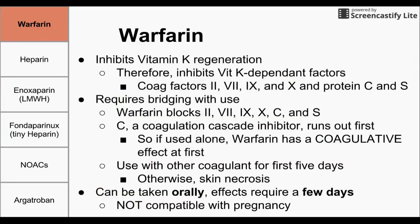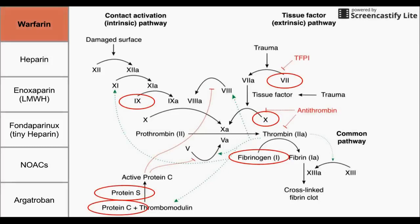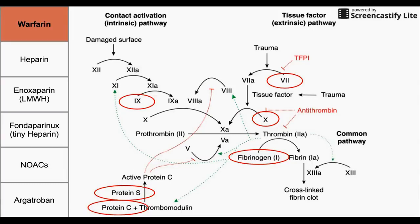Warfarin also requires bridging to use. Warfarin blocks this list of coagulation factors, and of these, protein C is the one that runs out first. It has a short half-life and a short concentration in the plasma, and those combined make protein C run out first. If protein C runs out — as we can see in this schematic, protein C has an inhibitory effect on the coagulation cascade — that means we're going to have an inhibition of an anticoagulant protein, meaning an increased coagulative effect.